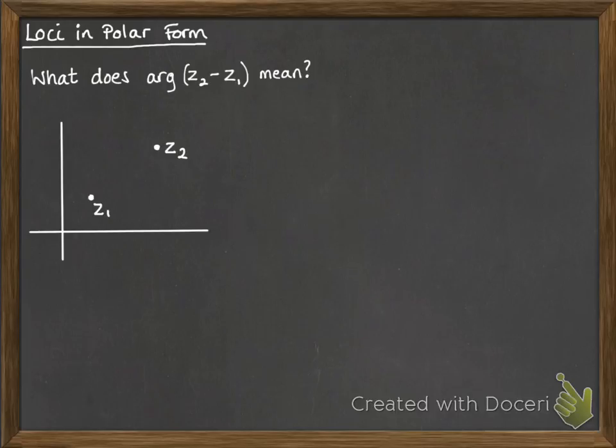So think about the argument of z2 minus z1. What would that actually mean? Well, z2 minus z1 would refer to the distance between those two complex numbers. We can think about it being this line here that's shown dotted. So what would the argument of that be?